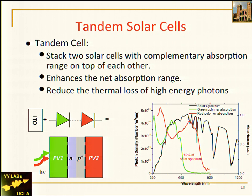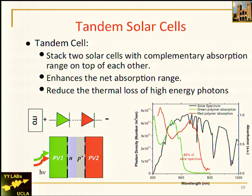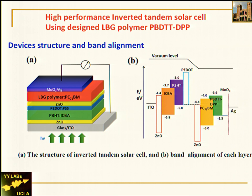The solution to these problems is the tandem solar cell. Tandem solar cells offer these advantages: first, you stack two or more solar cells with complementary absorption; second, you enhance the net absorption range. For example, a green-absorbing and a red-absorbing cell are built two diodes connected head to tail. Third, you reduce the thermal loss of high-energy photons — the Voc is often determined by the smallest bandgap, so if materials are simply mixed, high-energy photons are wasted. A tandem solar cell using an interconnecting layer, or tunnel junction, is a nice solution.